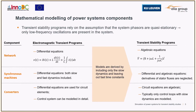Considering how power system components are modeled mathematically, the main difference is that EMTP does not necessarily make any assumptions on the component models, while models using transient stability programs are based on what is called the quasi-stationary phasor assumption. This assumption is based on the fact that only low frequency dynamics are taken into account, leaving out higher frequency dynamics associated with smaller time constants.